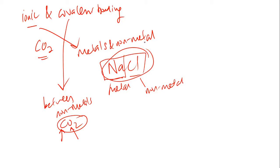It's straightforward, it's very easy to identify. Just look at the elements, see whether it's a metal and non-metal or non-metal and non-metal, and you can decide whether it's an ionic or covalent compound.